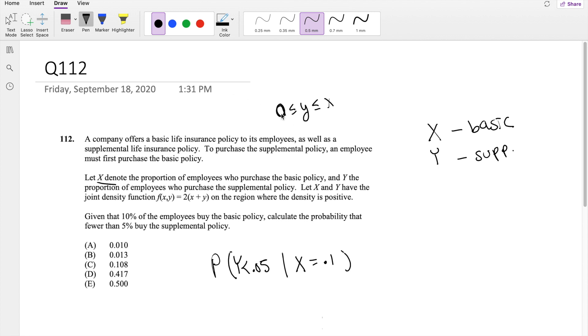We're also given that to purchase a supplemental policy, an employee must first purchase the basic policy. So that's saying Y cannot exceed X, right? Because this is going from zero, since all probability has to be bigger than zero. Let's think about this real quick first. Let's say you have 60% of the people, 60% of the company having the basic policy. Then that means the number of people having the supplemental policy cannot be bigger than 60, because in order to have a supplemental policy, you have to first have basic.